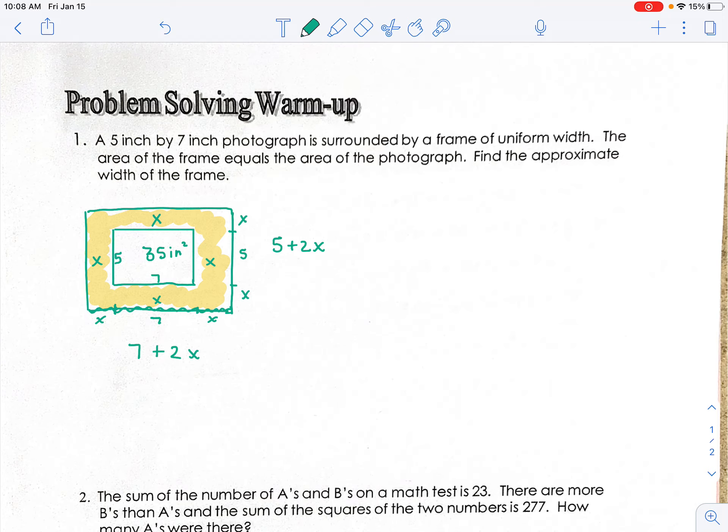Now we take the area of the large thing and we subtract the area of the photograph. That should leave the area of the frame. So the area of the whole thing would be (5 + 2x) times (7 + 2x) minus the area of the picture, which is 35,